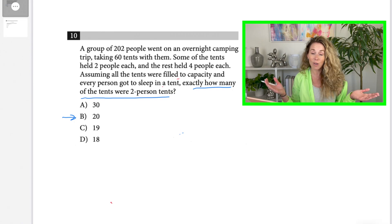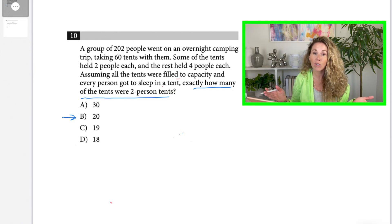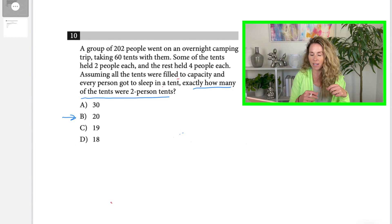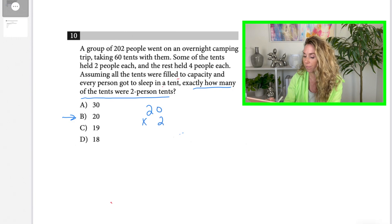If 20 is too small, you know the answer is A. If 20 is too big, you only have to try one more, 19. And then you'll know if it's 19 or 18. So I'm going to take 20 and use it in the problem. Those are two-people tents. So I'm going to do 20 times 2. So I know there's 40 people in the two-person tents.